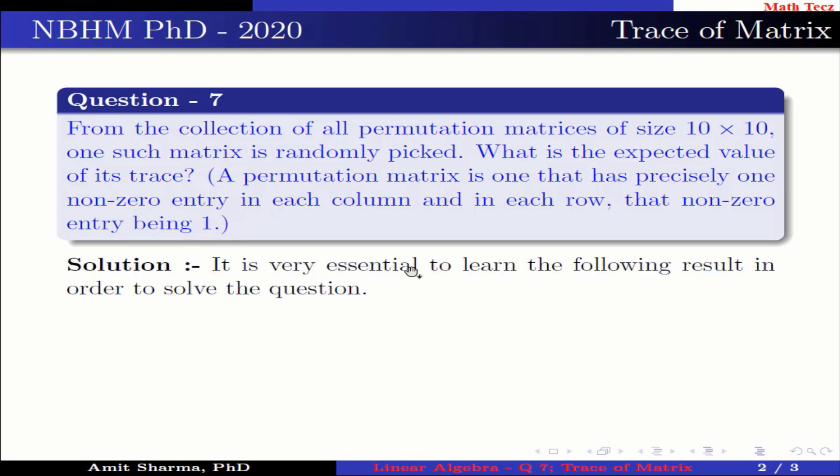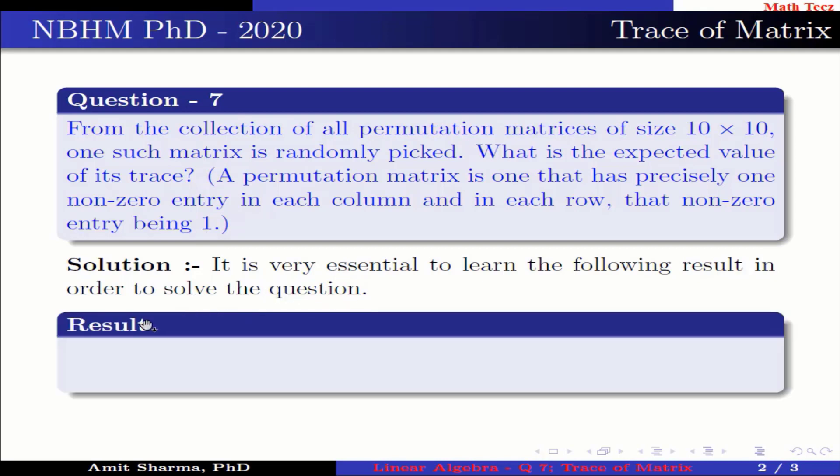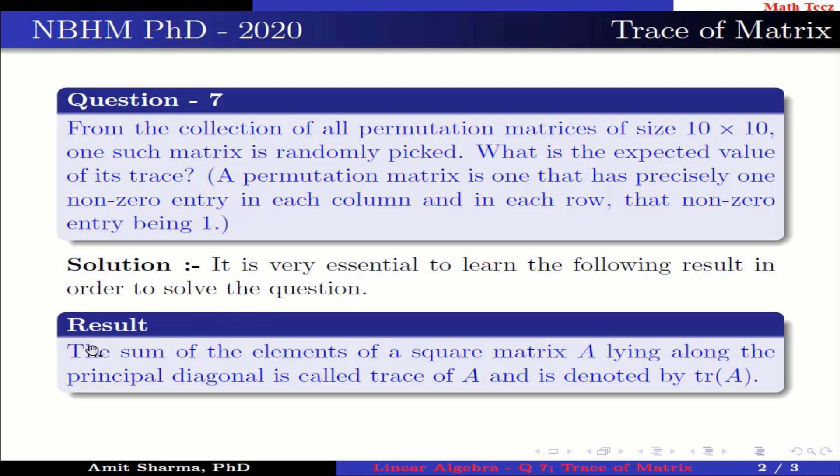It is very essential to learn the following result in order to solve the question. The sum of the elements of a square matrix A lying along the principal diagonal is called trace of A and is denoted by tr(A).